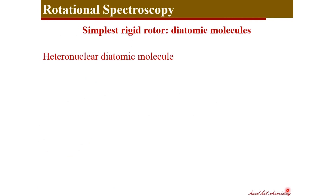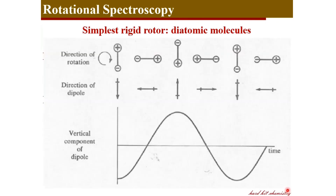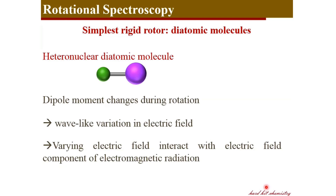On the other hand, a heteronuclear diatomic molecule is already polar, and its dipole moment also changes during rotation. As the alignment of the molecule changes during rotation, the direction of the dipole is oriented differently, giving a change in dipole moment like a sine wave. This wave-like variation of the molecule's electric field can interact with the electric field component of the electromagnetic spectrum, causing absorption of energy in the microwave region and giving rise to a microwave spectrum.